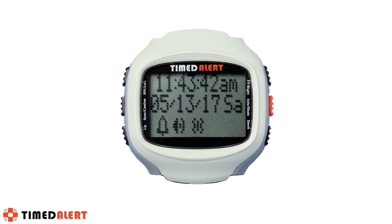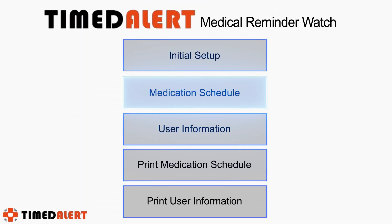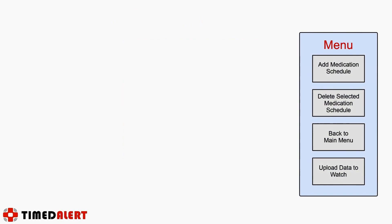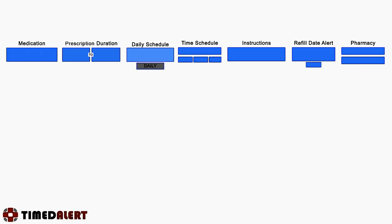Once the data has been successfully uploaded, you can return to the main menu. At this point, you are ready to program reminder and refill schedules into the watch. To do so, enter the medication schedule menu from the main menu, then click add medication schedule and the medication schedule template will now appear, allowing you to enter your first prescription schedule.